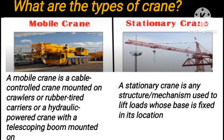So let me tell you what is mobile crane. A mobile crane is a cable-controlled crane mounted on crawlers or rubber tires, or a hydraulic-powered crane with a telescopic boom mounted on an automobile — that is called a mobile crane. A stationary crane is any structure or mechanism used to lift loads whose base is fixed in its location — that is called a stationary crane.